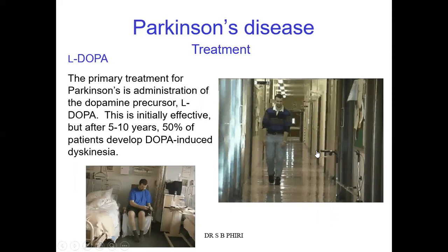There are also other possibilities of treatment — studies are still ongoing to find how best we can treat Parkinson's disease. For instance, there is gene therapy, which involves correction of disease through introduction of new genetic information. You introduce genetic information that codes for enzymes able to convert L-DOPA into dopamine or to produce dopamine directly.